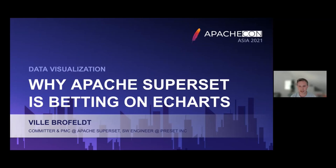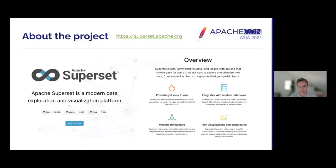Today I'm going to be talking about how Superset is increasingly adopting eCharts to replace NVD3 and the motivations behind the switch. Before we start, just a quick introduction into what Apache Superset actually is. I took these snapshots from the Superset homepage, which has a bunch of really good documentation. If you haven't seen the new homepage yet, I recommend checking it out because the documentation is much better now and it's easier to use as well.